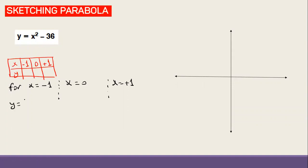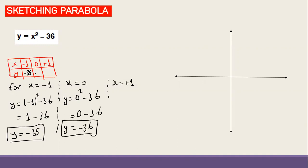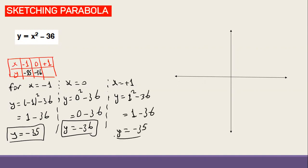For x = -1: y = (-1)² - 36 = 1 - 36 = -35. For x = 0: y = 0² - 36 = -36. So my first value is (-1, -35) and the second point is (0, -36).